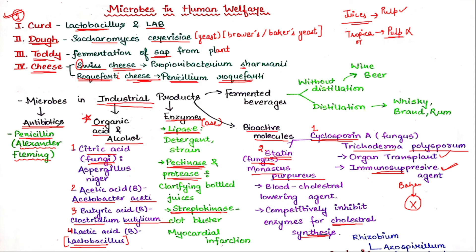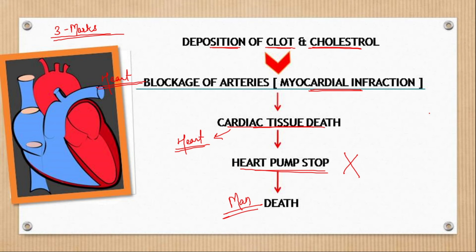Now moving on to fermented beverages. Beverages are made in two ways: distillation and non-distillation. Non-distilled beverages include wine and beer. Distilled beverages include whisky, brandy, and rum. Make sure your flowchart on this is clear.